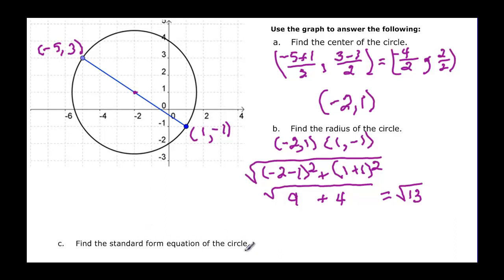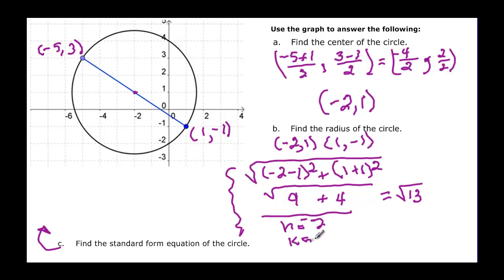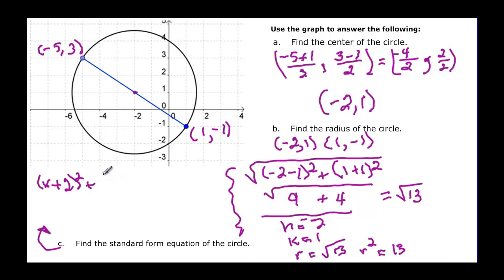Now we write the standard form of the equation. H is negative two, k is one, and r is the square root of thirteen, so r squared is thirteen. The equation is: x plus two, quantity squared, plus y minus one, quantity squared, equals thirteen.